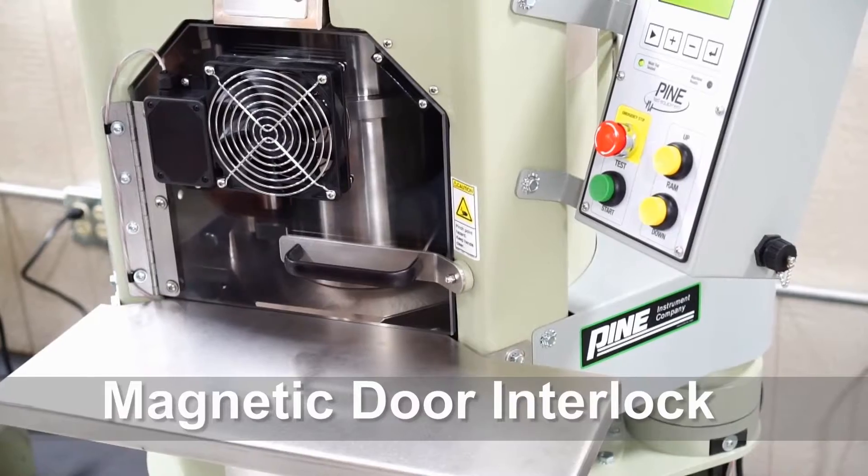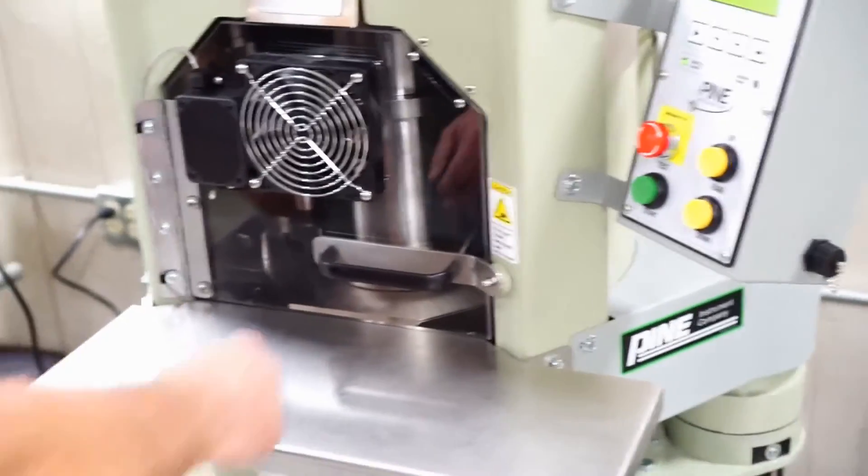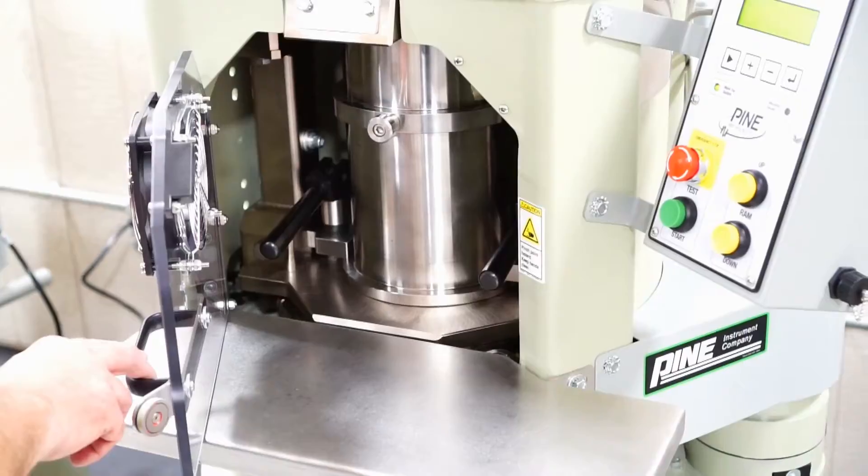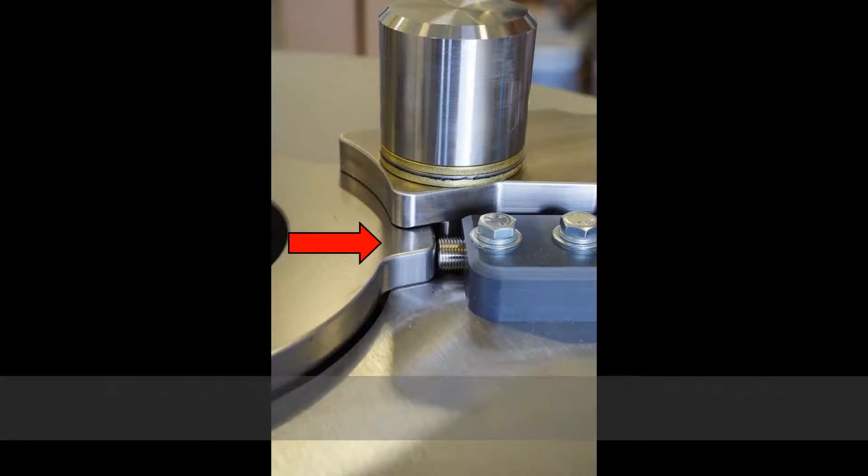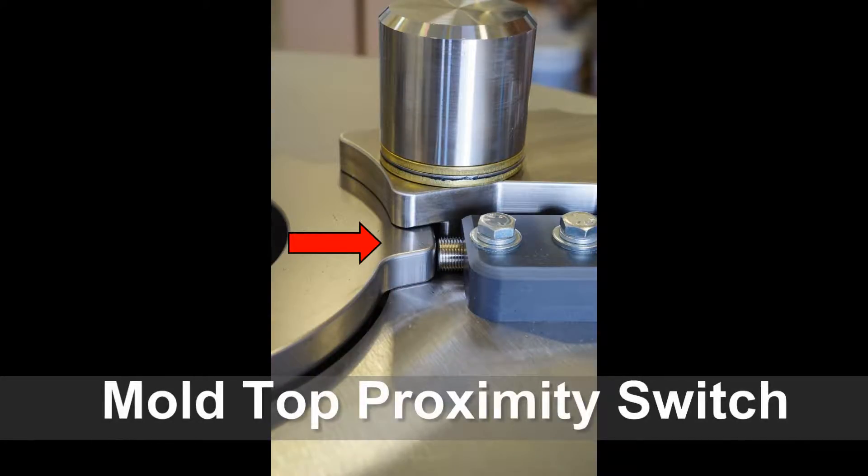Opening the compaction chamber door will also make the machine come to a complete stop. And if the machine detects that the mold top has come loose or out of place, all motion will stop.